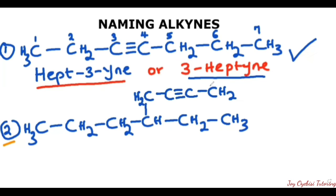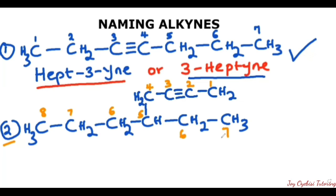So if we are to number, I would start from here because this will give that triple bond the lowest number. If we start from this side or from here, it will be a higher number. So the best bet will be to start from here: one, two, three, four, five, six, seven, eight. Now if we go the other way: one, two, three, four, five, six, seven. So eight is the longer chain, while seven is lesser than eight. We will not go that other way since eight is the longer one.